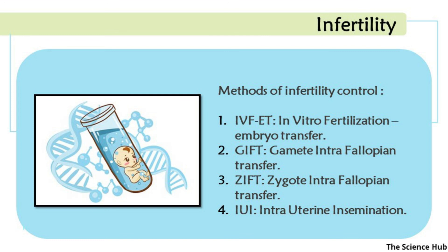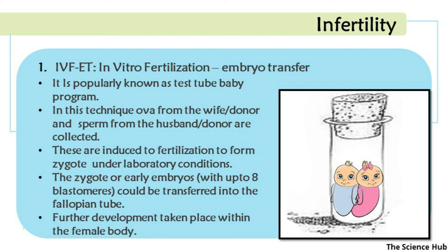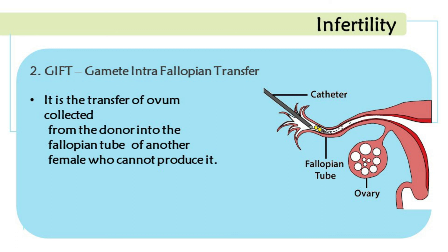Methods for controlling infertility include: IVF-ET (in vitro fertilization embryo transfer), GIFT (gamete intra-fallopian transfer), ZIFT (zygote intra-fallopian transfer), and IUI (intrauterine insemination). In IVF-ET, popularly known as the test-tube baby program, ova from the wife or donor and sperm from the husband or donor are collected and induced to fertilize under laboratory conditions. The resulting zygote or early embryo (up to eight blastomeres) is transferred into the fallopian tube, with further development taking place inside the female body.